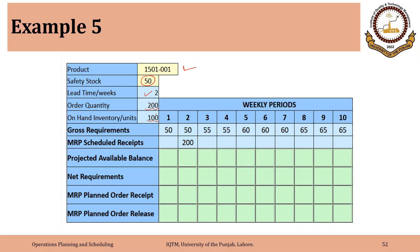Starting with week 1, there are gross requirements of 50. The requirements of 50 minus available supply of 100 from previous periods gives us negative net requirements — in other words, there are no net requirements for week 1. After meeting this demand of 50, we will be left with 50: inventory of 100 minus requirement of 50.